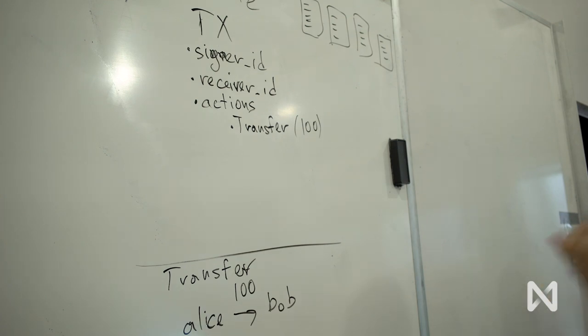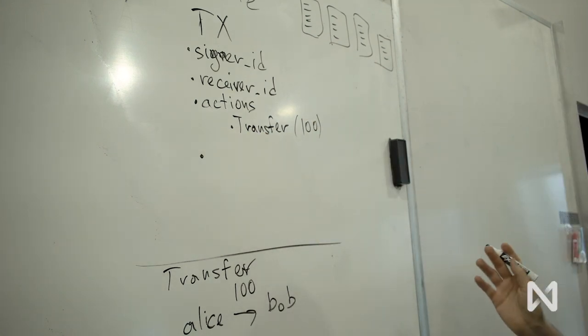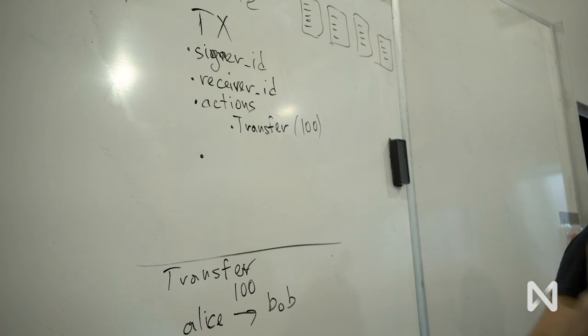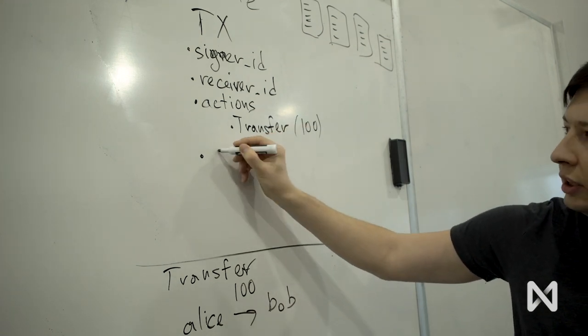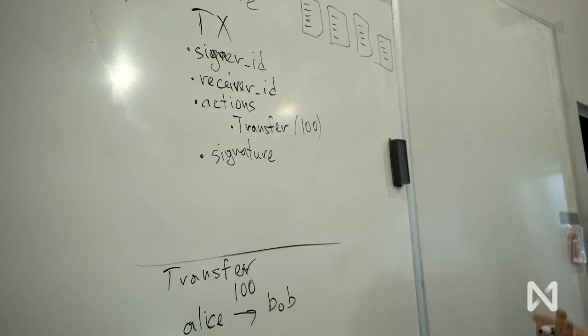And this is a transaction. So now, to indicate to the chain that this transaction is actually done by Alice and not someone else, Alice has to sign this transaction with one of the access keys, which contains a private key. Alice has to sign this transaction by computing a hash of this transaction. This gives you a unique field that she signs with a private key and creates a signature. Transaction also contains some additional information that's needed to make transaction unique, indicate which public key was used to sign, and stuff like this.